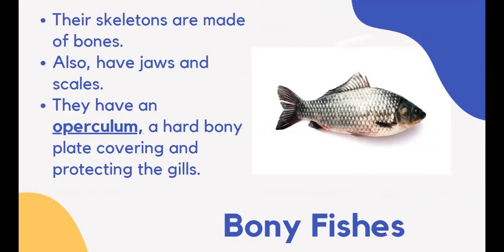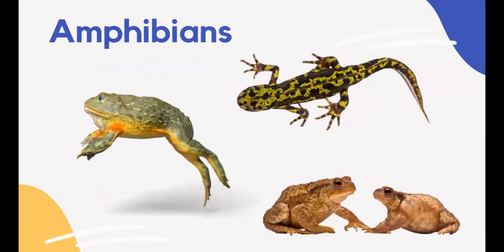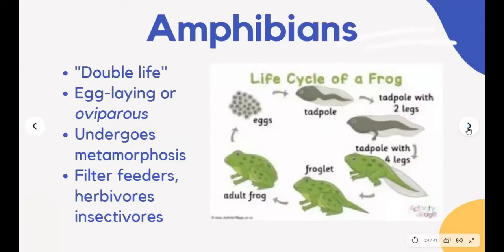The word amphibian means double life — they live both on land and in water. During the larval stage, amphibians spend their lives in water. As adults, they spend their lives on land. Like fishes, they are cold-blooded. Amphibians are egg-laying, or oviparous, animals. Their eggs are fertilized externally and they undergo metamorphosis. As adults, most amphibians live on land in damp environments to keep their thin skin moist.